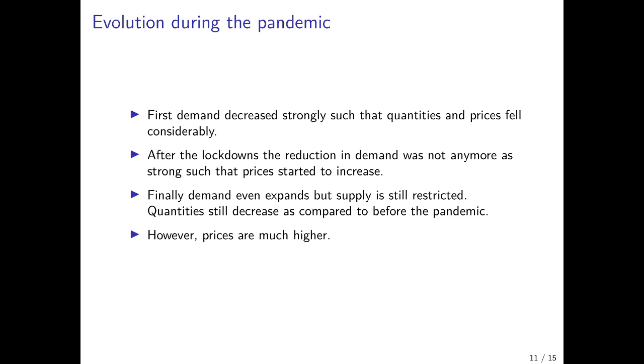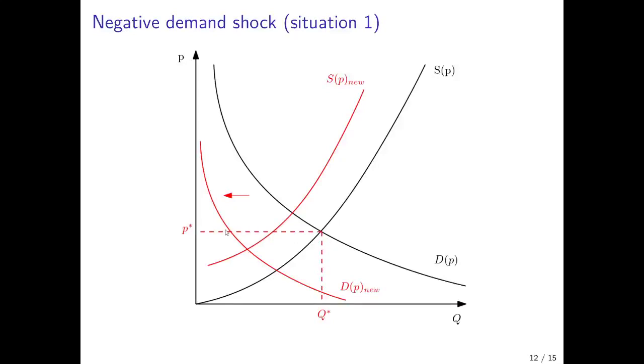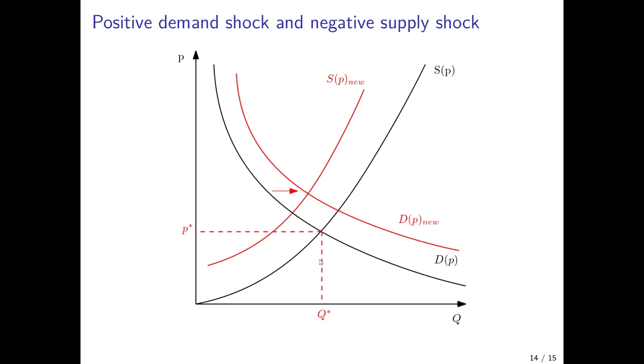Finally, after the COVID-19 pandemic, when supply chains were still disrupted, demand started to be higher than before the pandemic. In this case, quantities could still decrease, but the price level would be much higher than before the pandemic. That's what we saw, this inflation push after the pandemic. In terms of the evolution of our graph, we would have initially a strong leftward shift in the demand curve, then later only a smaller reduction in demand, and finally an expansion in demand that still meets restricted supply and supply chain disruptions.